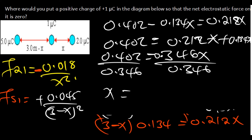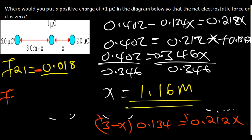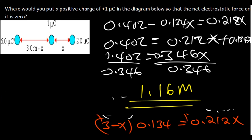So X equals 0.402 divided by 0.346, which gives X equals 1.16 meters. To find the distance on the other side, we calculate 3 minus 1.16, which equals 1.84 meters. So the charge must be placed 1.16 meters from the 2 microcoulomb charge and 1.84 meters from the 5 microcoulomb charge.